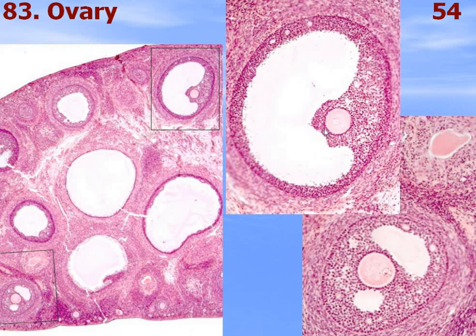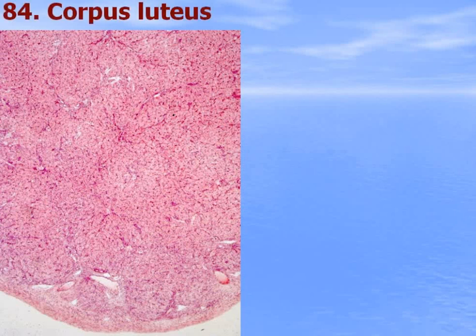The tertiary follicle shows the cumulus oophorus with the oocyte, granulosa layer around the cavity filled with follicular fluid containing estrogens, basal membrane, and teca inner and outer layers. Corpus luteum is a temporary endocrine gland — this is a corpus luteum of pregnancy, a very large gland inside the ovary.